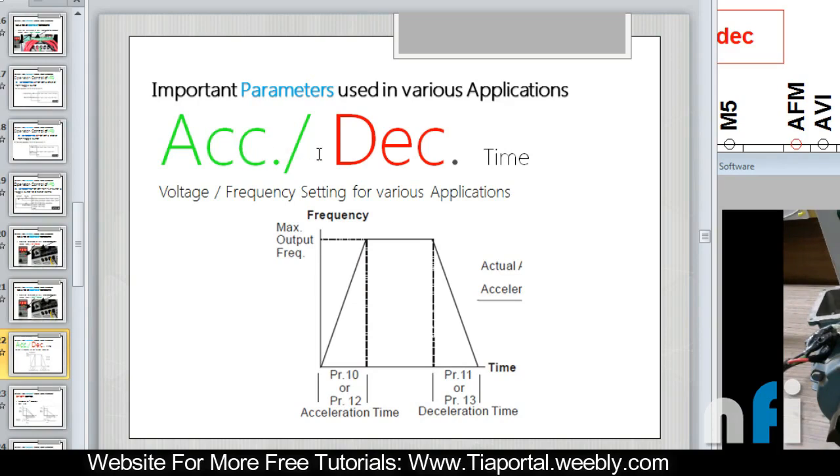For example, if a motor is running at 15 Hz, it is given a command of 50 Hz, so the time taken by motor to reach from 15 to 50 is the acceleration time. And when I press the stop, then the time taken by motor to reach from 50 back to zero is the deacceleration time.